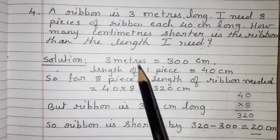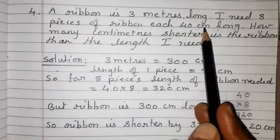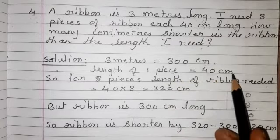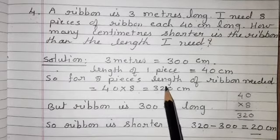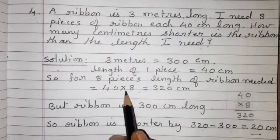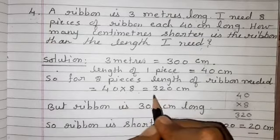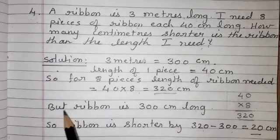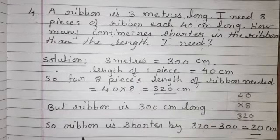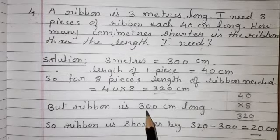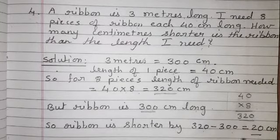Solution: 3 meters means 300 centimeters. The length of 1 piece is 40 centimeters, and I need 8 pieces. So for 8 pieces, the length of ribbon needed is 40 multiplied by 8, which equals 320 centimeters. But the ribbon is 300 centimeters long. So the ribbon is shorter by 320 minus 300, which equals 20 centimeters. The ribbon is shorter by 20 centimeters.